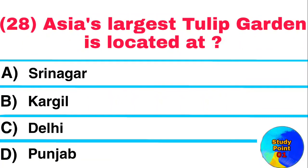Question: Asia's largest tulip garden is located at? Answer: Srinagar.